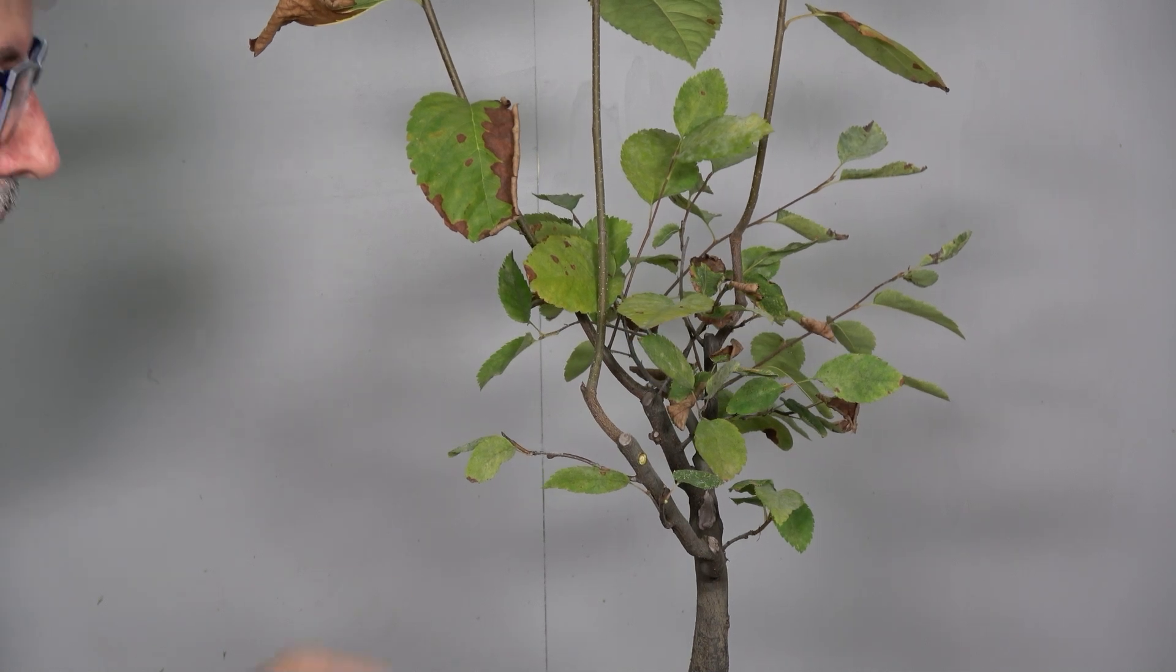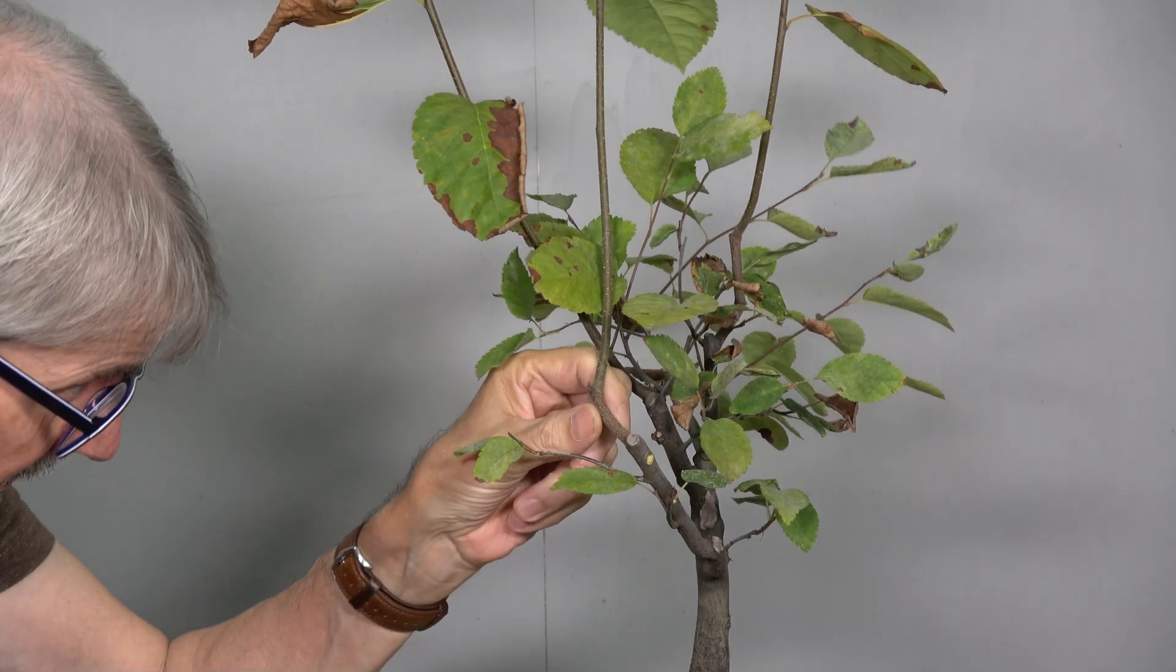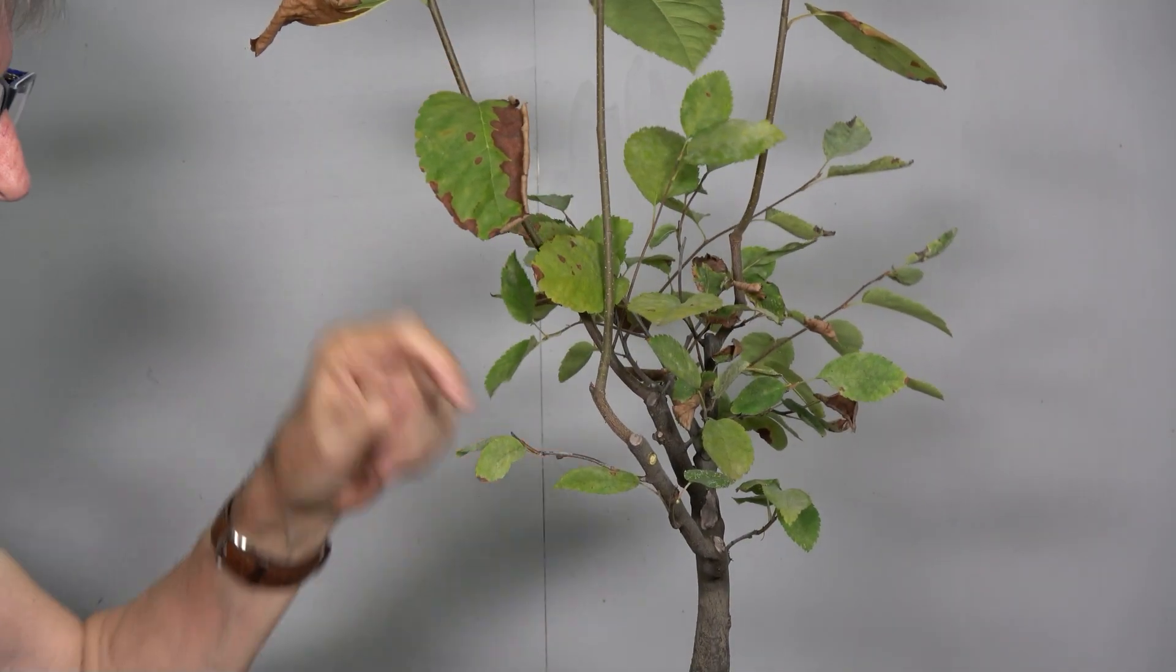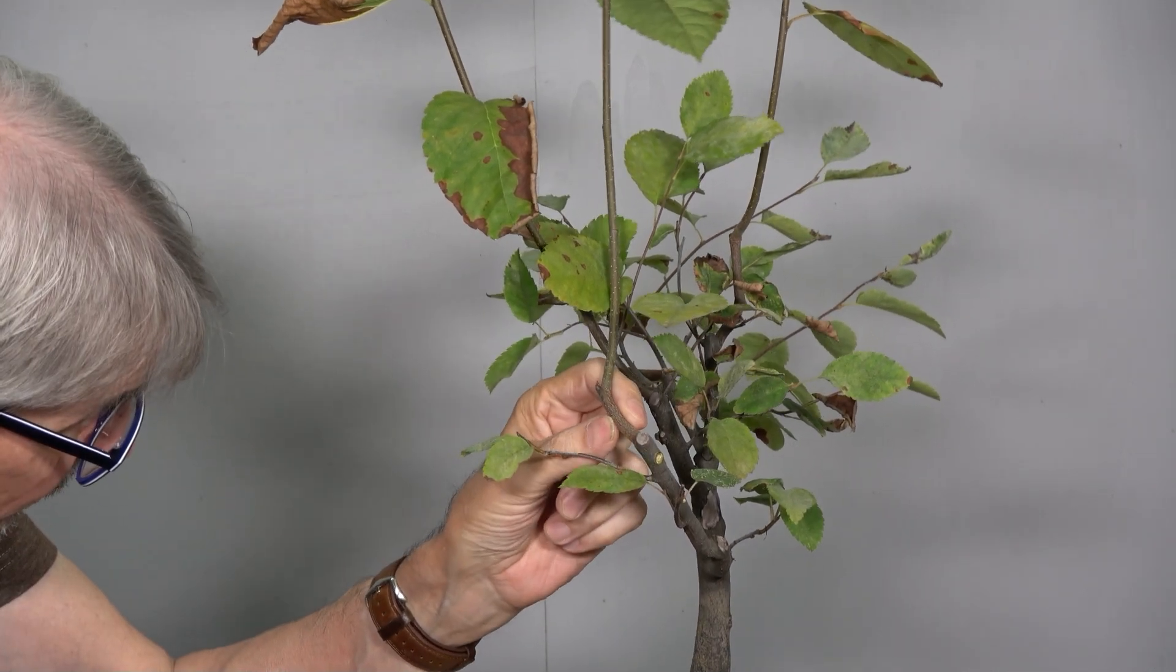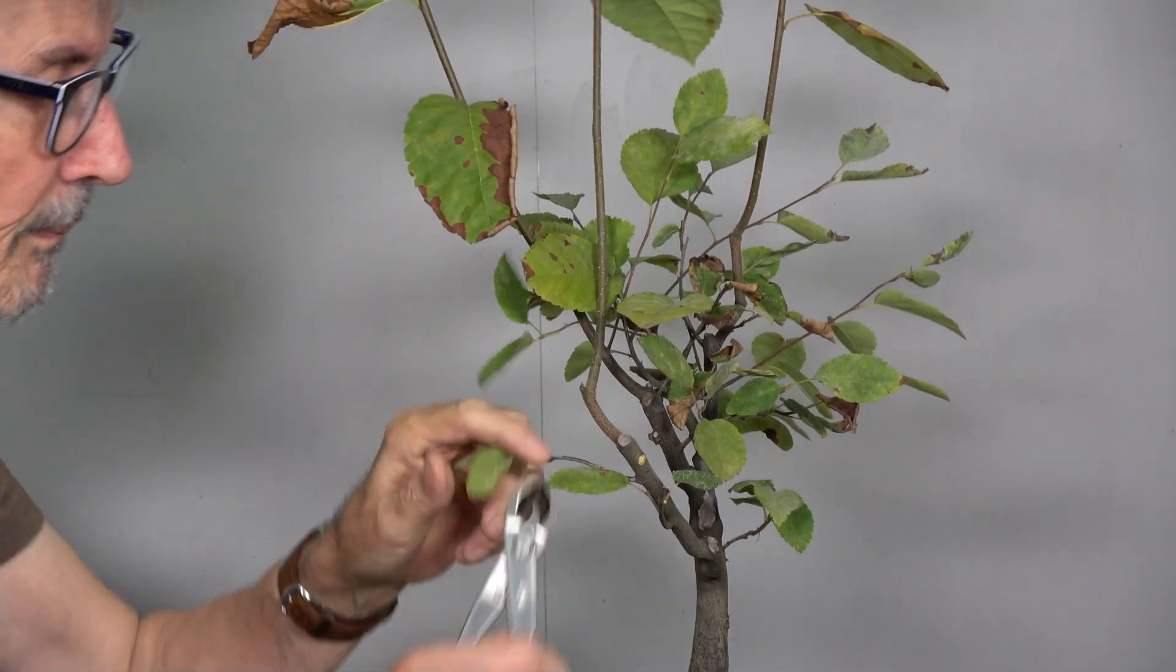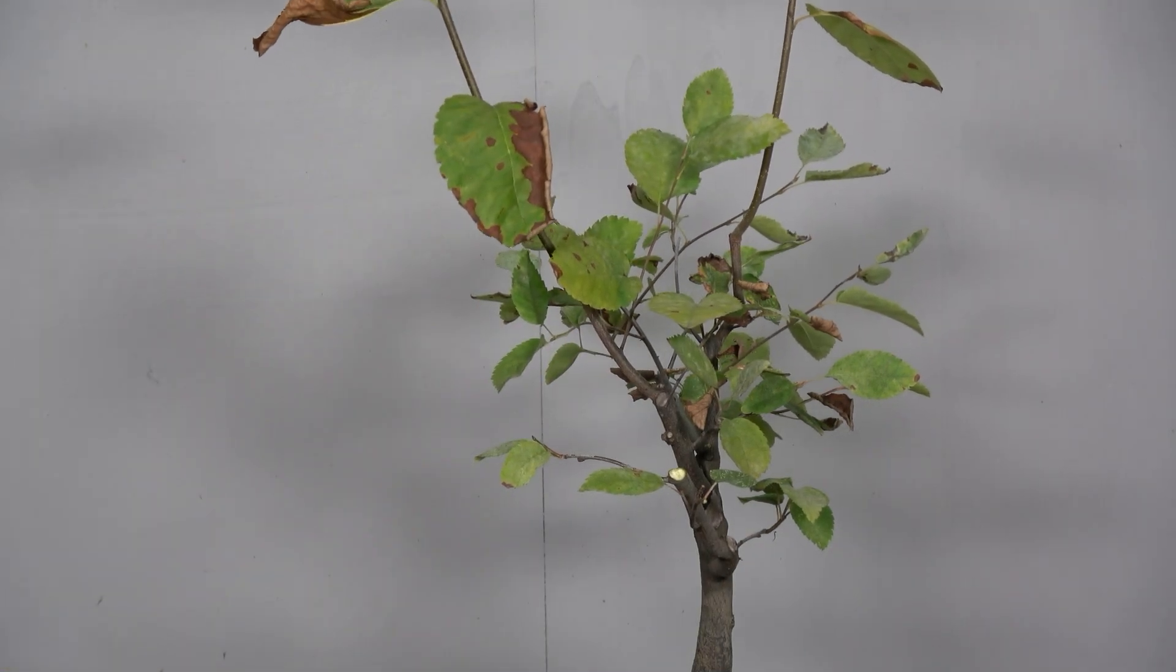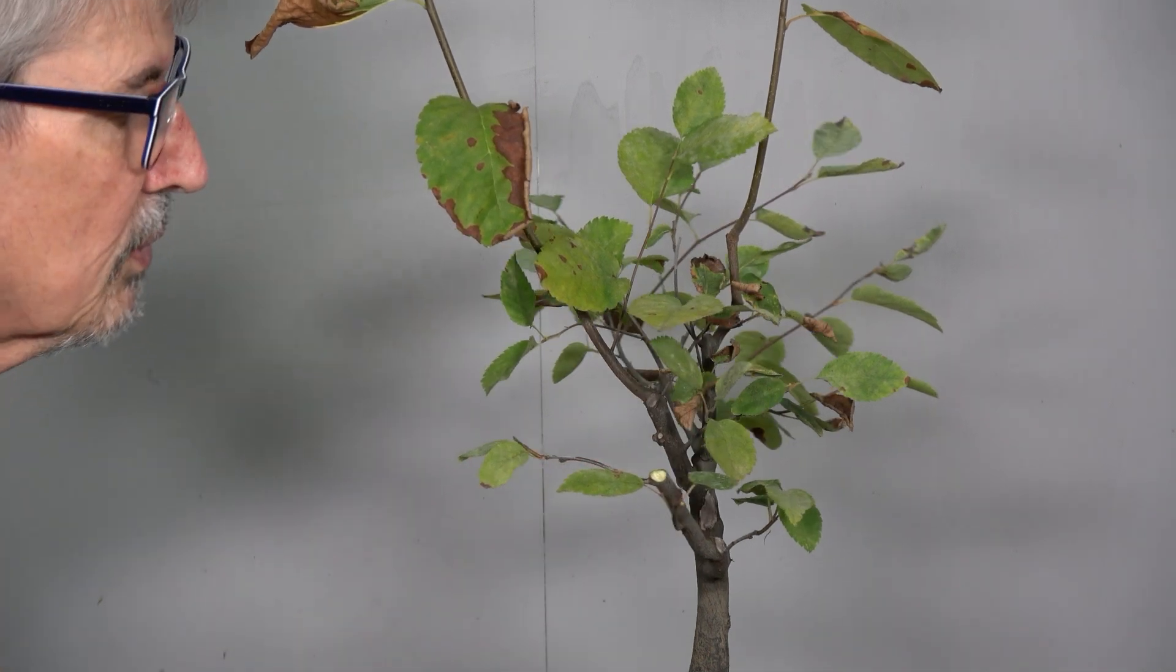Gut, dann kommen wir zum ersten langen. Das ist der hier. Der ist natürlich schräg gewachsen und hat hier auch keine großartigen Knospen. Will ich da auch nicht so haben. Sonst wäre der mir zu dick da außen. Nehme ich ihn hier weg. Die Schnittwunden versorge ich nachher.